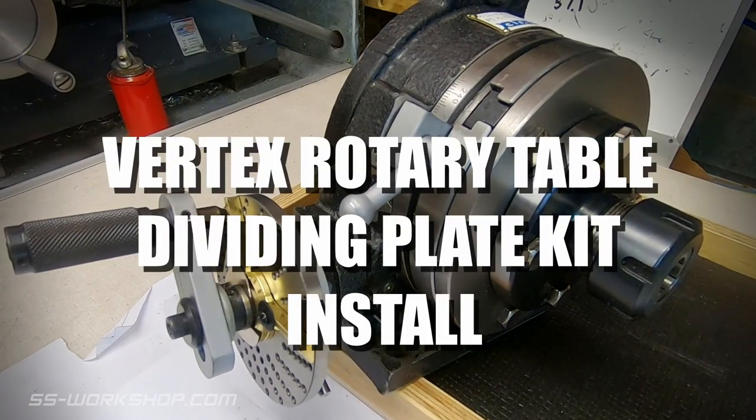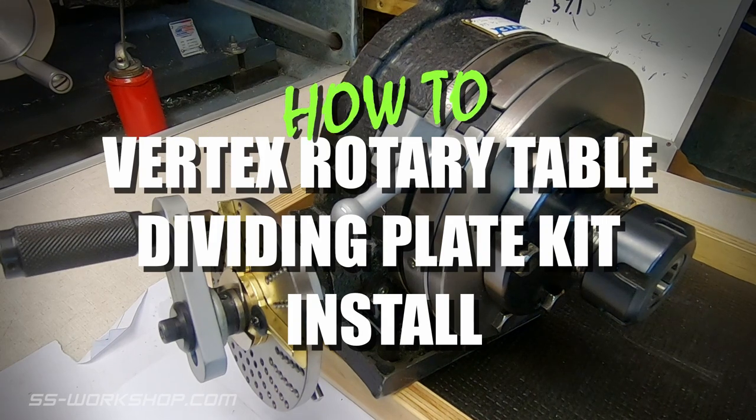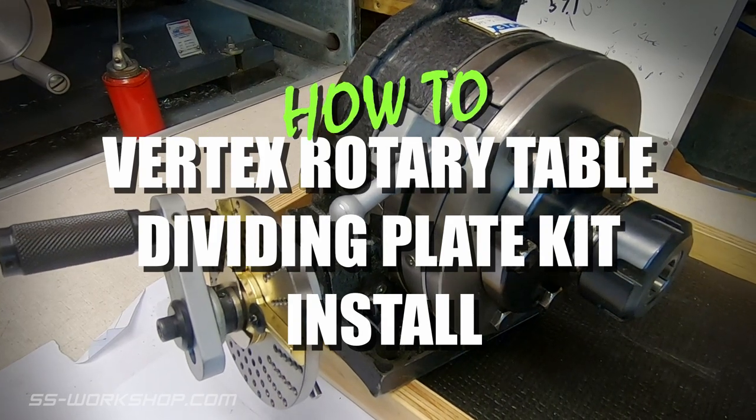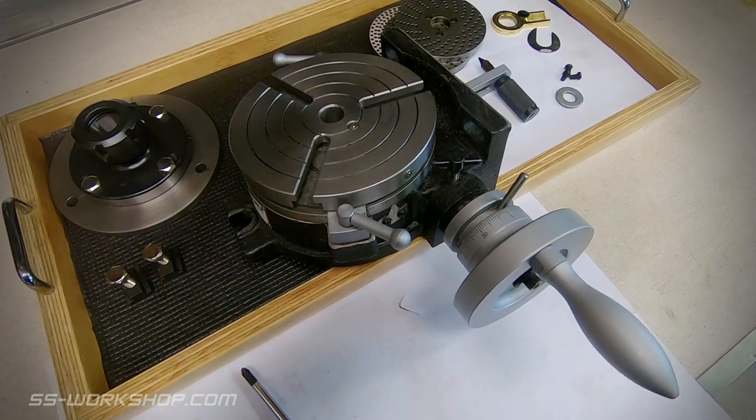Today I'm going to show you how to install a dividing plate kit on a vertex rotary table. The rotary table I'm using today is a vertex HV6 being the 6 inch or 150 millimeter model.